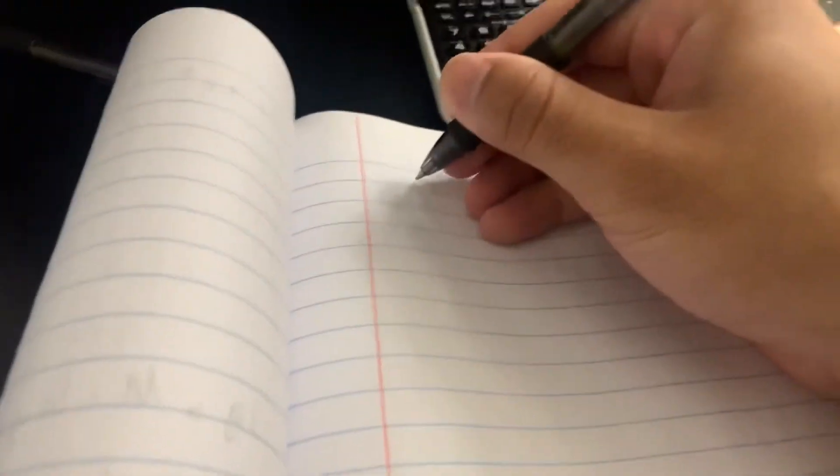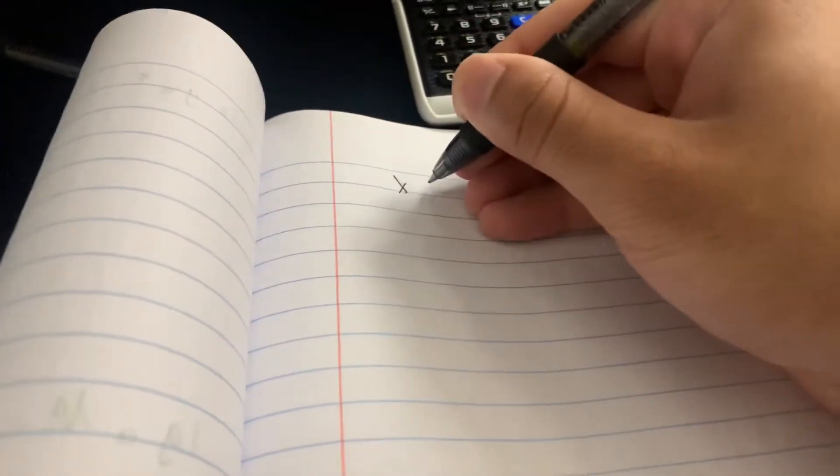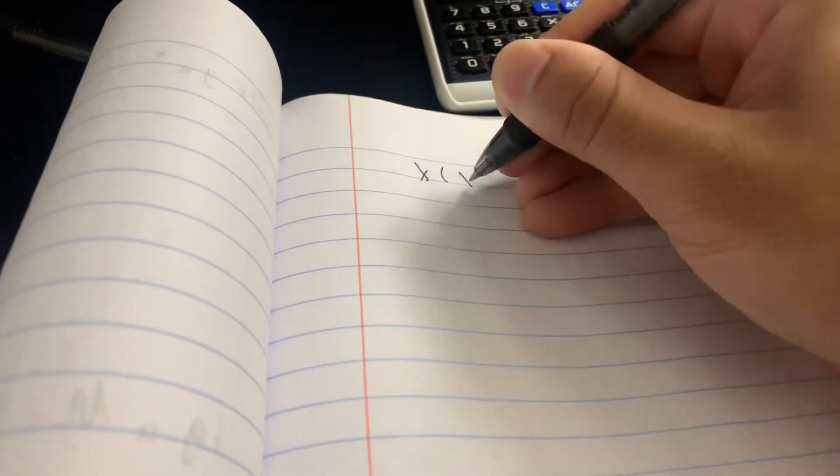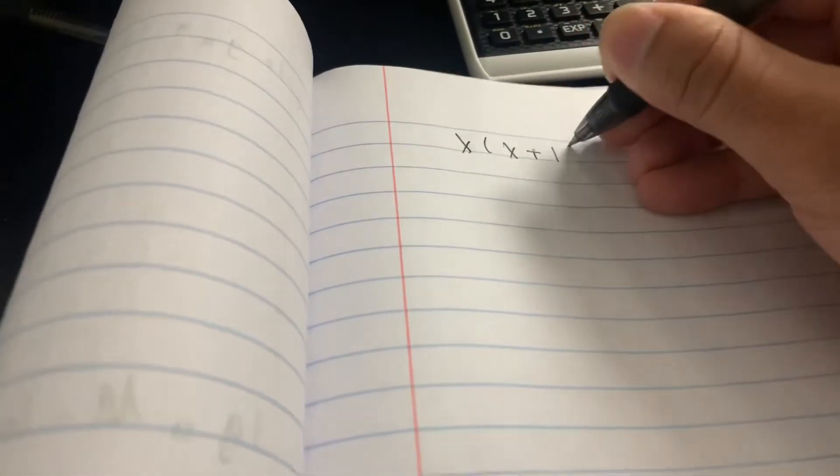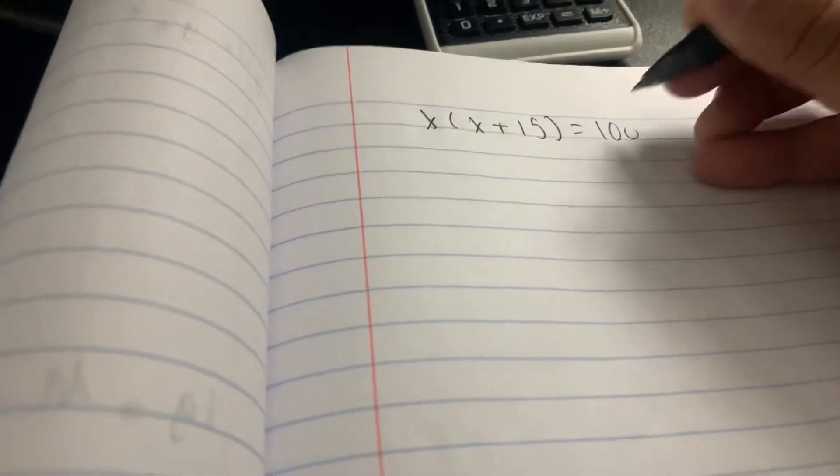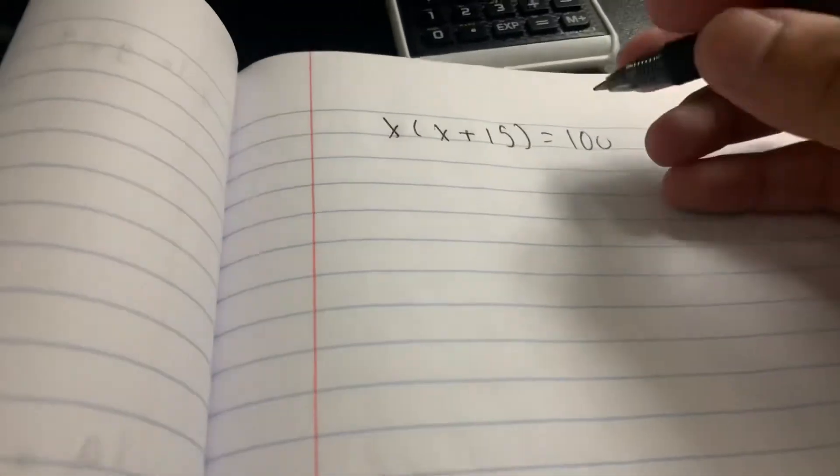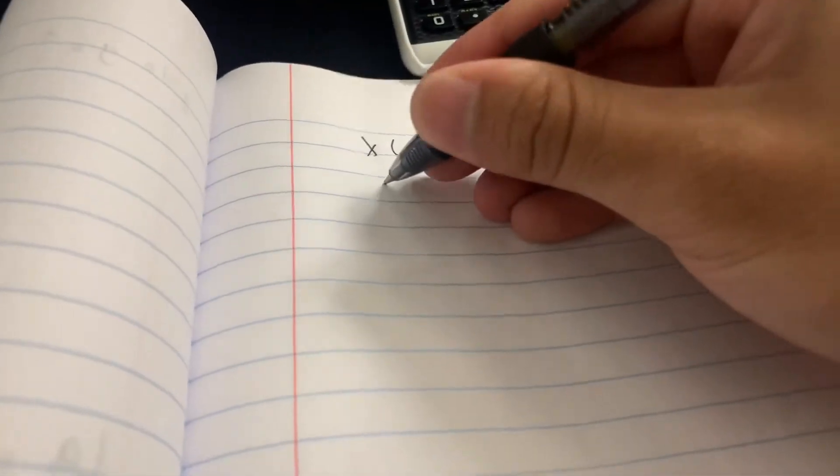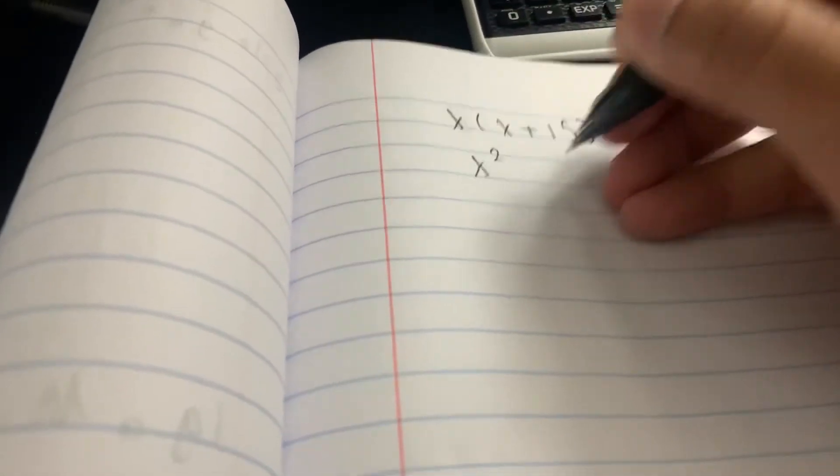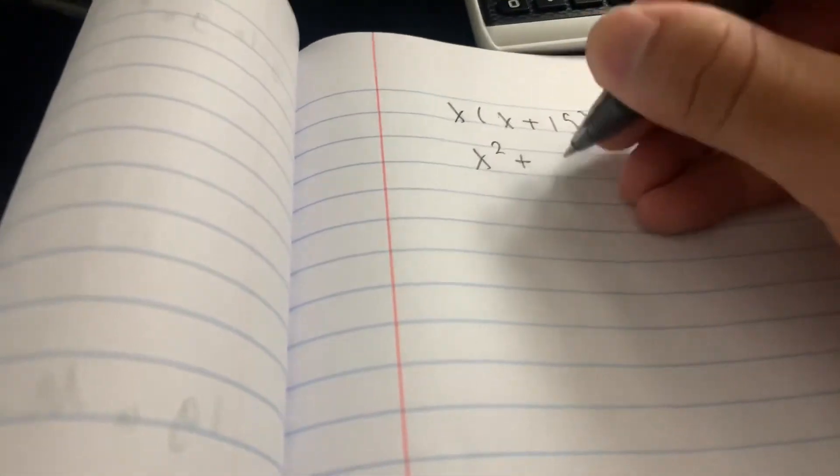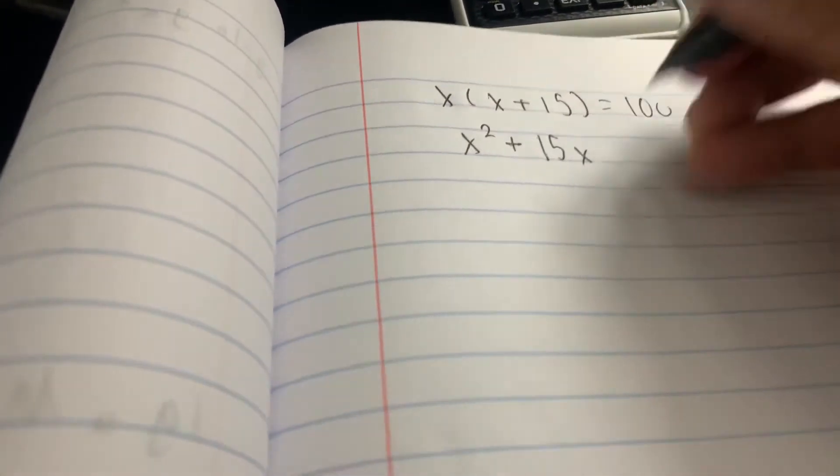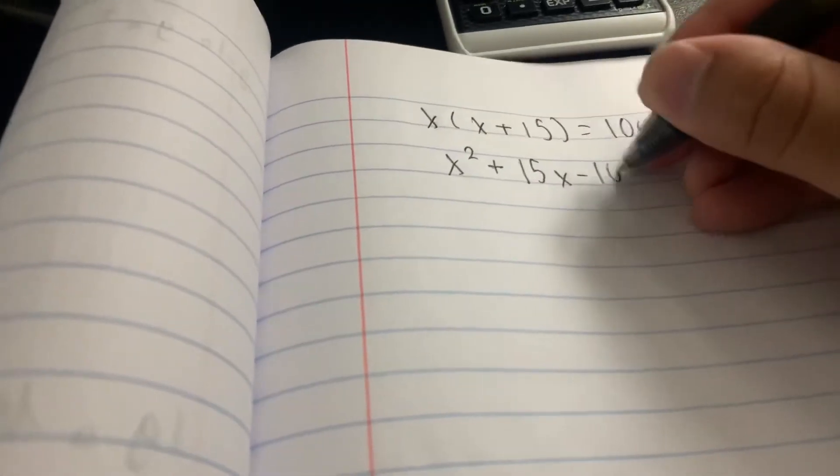So what we're going to do, we're going to go over here. I'm going to write that equation out. X times X plus 15 equals 100, 10 squared, 100. Solve that out. X squared plus 15X minus 100.